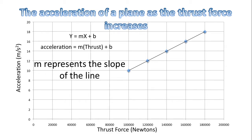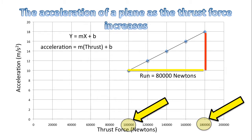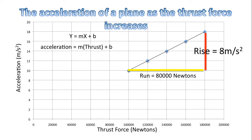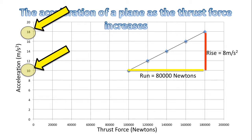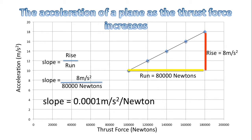M represents the slope of the line, so we will draw the run and the rise for this line. The run is 80,000 newtons — the run starts at 100,000 newtons and ends at 180,000 newtons, a difference of 80,000. The rise is 8 meters per second per second — it starts at 10 and ends at 18, a difference of 8. Slope is rise over run: 8 divided by 80,000, giving us our slope value.